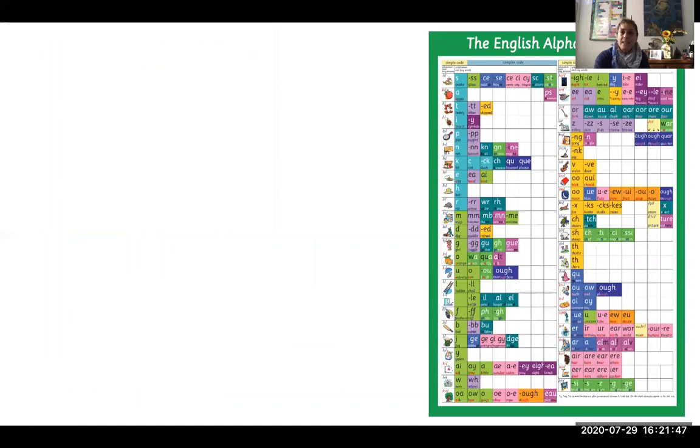But now, let's get to the English alphabetic code. As I said, the first column here will show all the sounds, the pronunciations, the phonemes of the English alphabetic code.